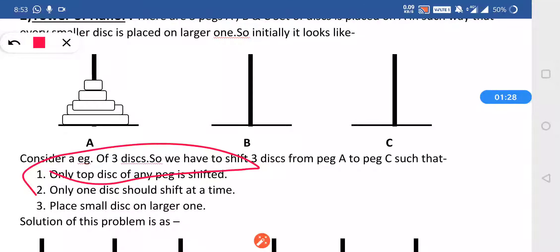The next rule is only one disk can be shifted at one time. Whenever we are transferring the disk from peg A to peg B or C, only one disk can be shifted at one time. We cannot shift more than one disk at once. That was the second rule.